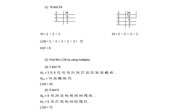Find the LCM by using multiples. For 3 and 14: multiples of 3 are 3, 6, 9, 12, … and multiples of 14 are 14, 28, … The first common multiple is 42, so LCM = 42. For 8 and 9: multiples of 8 are 8, 16, 24, … and multiples of 9 are 9, 18, 27, … The first common multiple is 72, so LCM = 72.